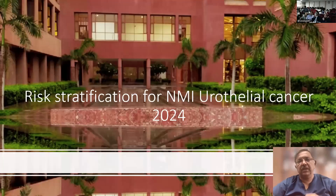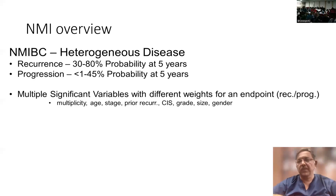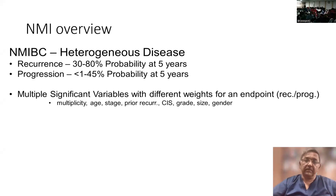The major thing that has changed is the risk stratification and some of the new changes in the guidelines. We know that non-muscle invasive bladder cancer is an extremely heterogeneous disease with recurrence potential which varies from 30 to 80% at 5 years, and a progression potential which varies from 1 to 45%. So you need to identify bad from good non-muscle invasive bladder cancers because the treatment would vary significantly.